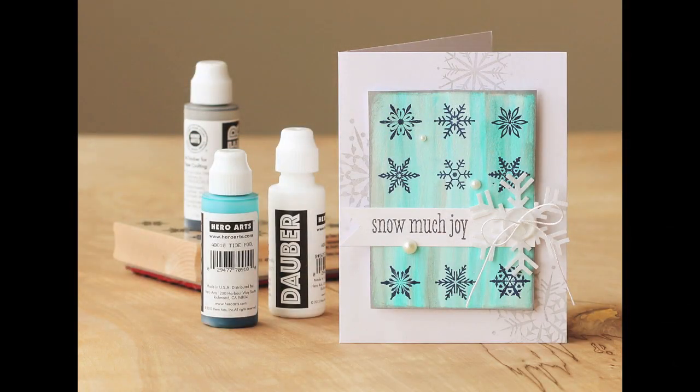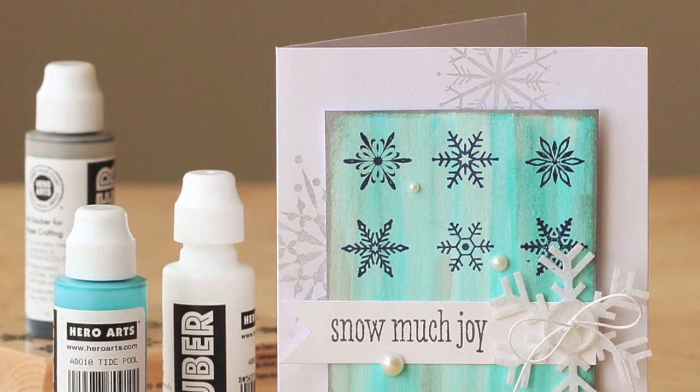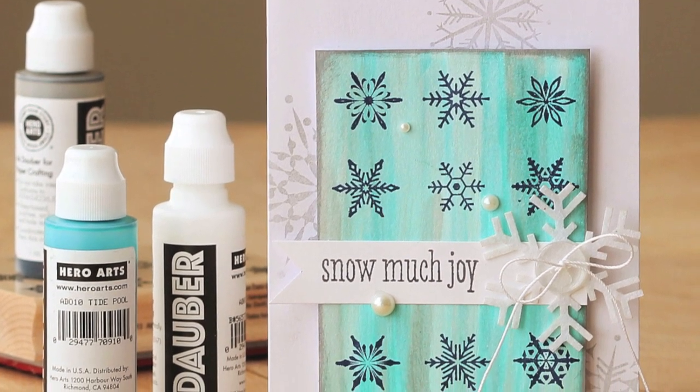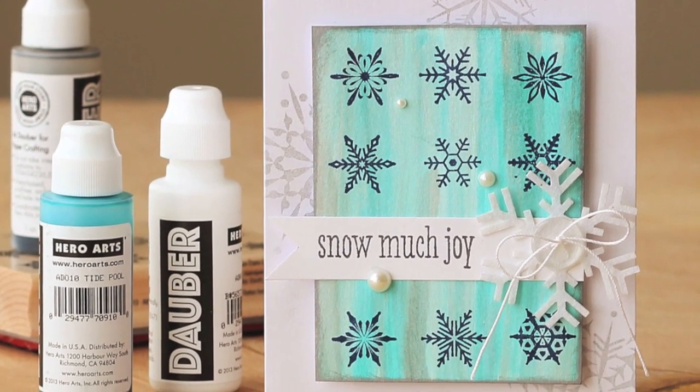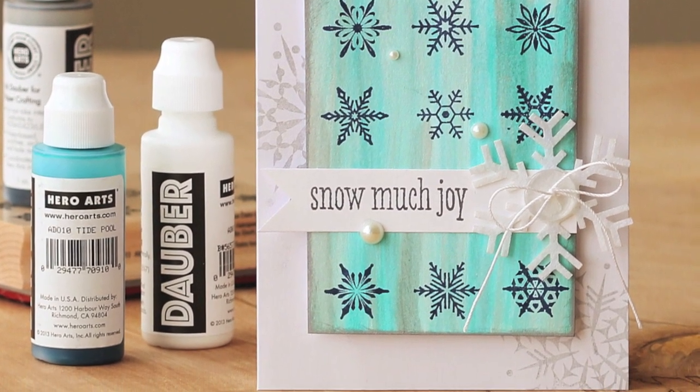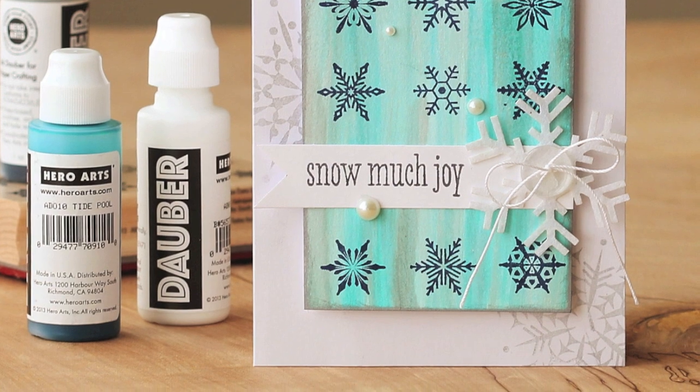So here is the finished card. And here you can see the edges better. And then to wrap things up I did a little trick that I always like to do. I mixed some older snowflake stamps and the Snow Much Joy message with these new daubers and the new snowflake sampler. This just kind of helps give new life to older stamps.